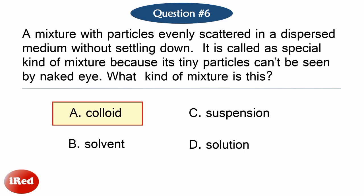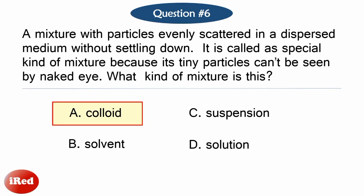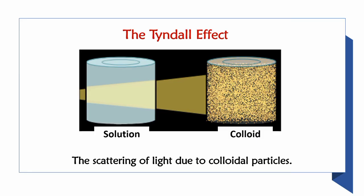The correct answer is letter A: Colloid. The particles in colloids are microscopic and cannot be seen by the naked eye. To identify a colloid mixture from a solution, you can use the Tyndall effect. This is where you pass a light through a mixture. If the light bounces off the particles, you will see the light shine through and you have a colloid mixture.